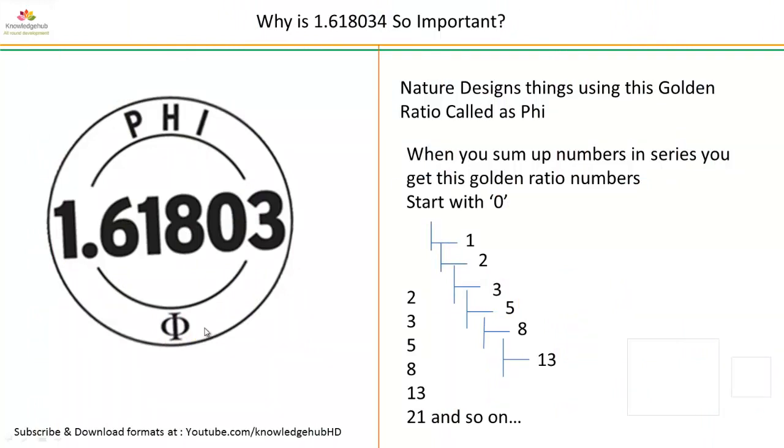When you sum up numbers in series, you get this golden ratio numbers starting with zero. This is first Fibonacci number, then one. If you add one into zero you get one. If you again add one into one you get two. If you add two into one you get three. If you add three into two you get five. Again, if you add five into three you get eight. Similarly, if you go on adding numbers you will get this Fibonacci sequence.